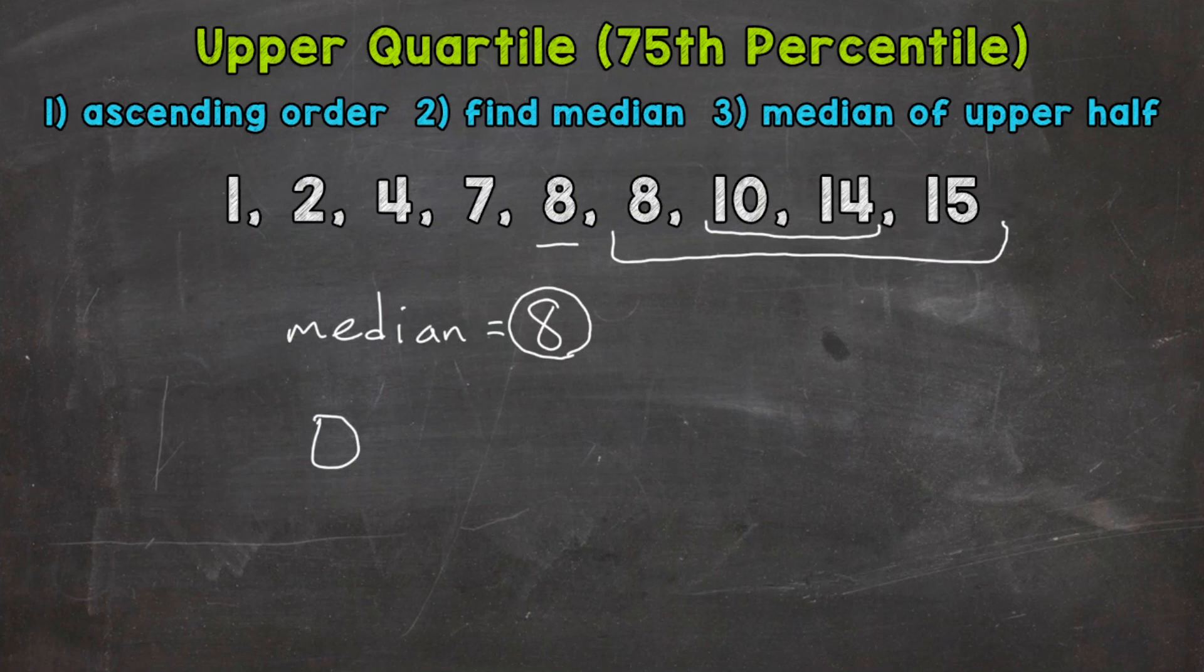So down here, I'm going to put Q3 equals. So Q3 means quartile three. That's the same thing as upper quartile or 75th percentile. All of those mean the same thing. So we need to find the average. 10 plus 14 and then divide by two. So 10 plus 14 gives us 24, and divide by two, we get 12. So our upper quartile is 12.